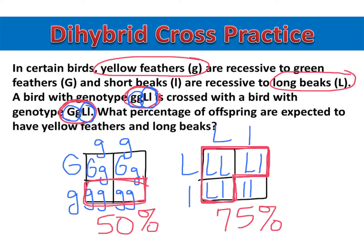To figure out the percentage of offspring that will have yellow feathers and long beaks, I take the percentage from each Punnett square and multiply them: 50% times 75%. You'll want to enter that as 0.50 times 0.75 if you don't have a percent button. That gives you 0.375, and moving the decimal twice tells us that 37.5% of the offspring will have yellow feathers and long beaks.